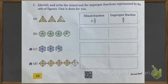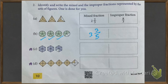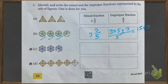Now next question number 2: identify and write the mixed and improper fraction. Here you can see this is colored fully, this is colored fully, this is also colored fully. And this last one is 3 parts — 5 of 5 parts are colored. So we write 3 and 3 upon 5. Then 3 into 5 plus 3 divided by 5 is 15 plus 3 divided by 5, which equals 18 by 5.